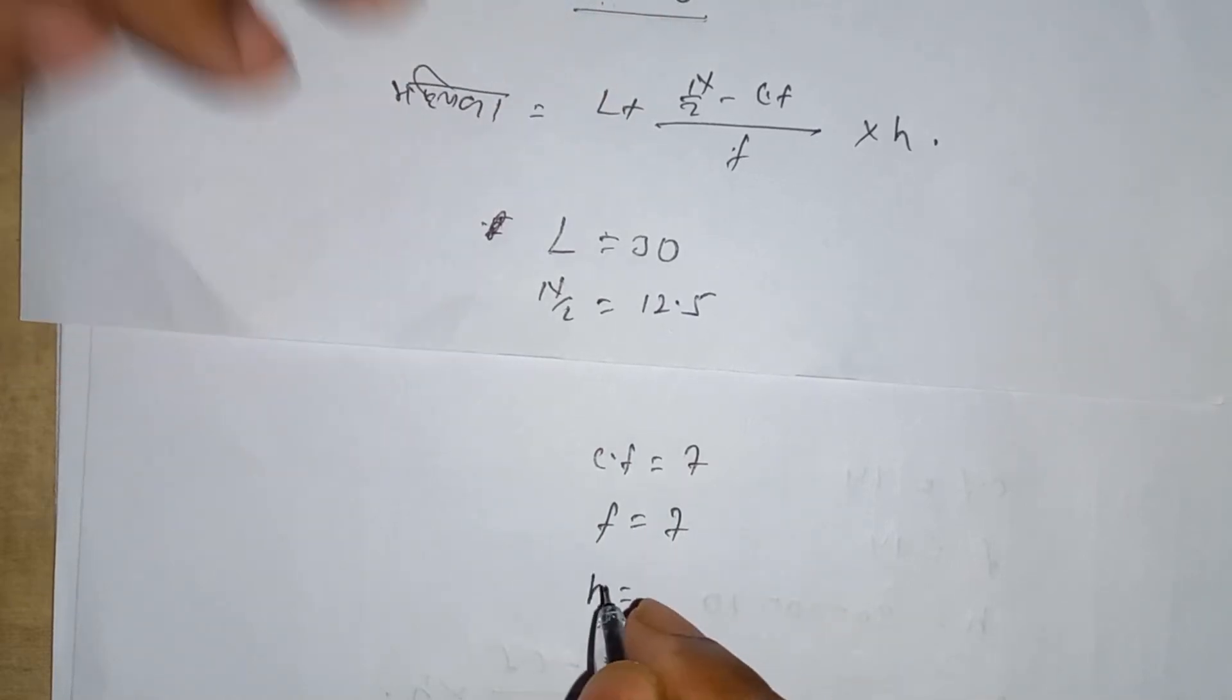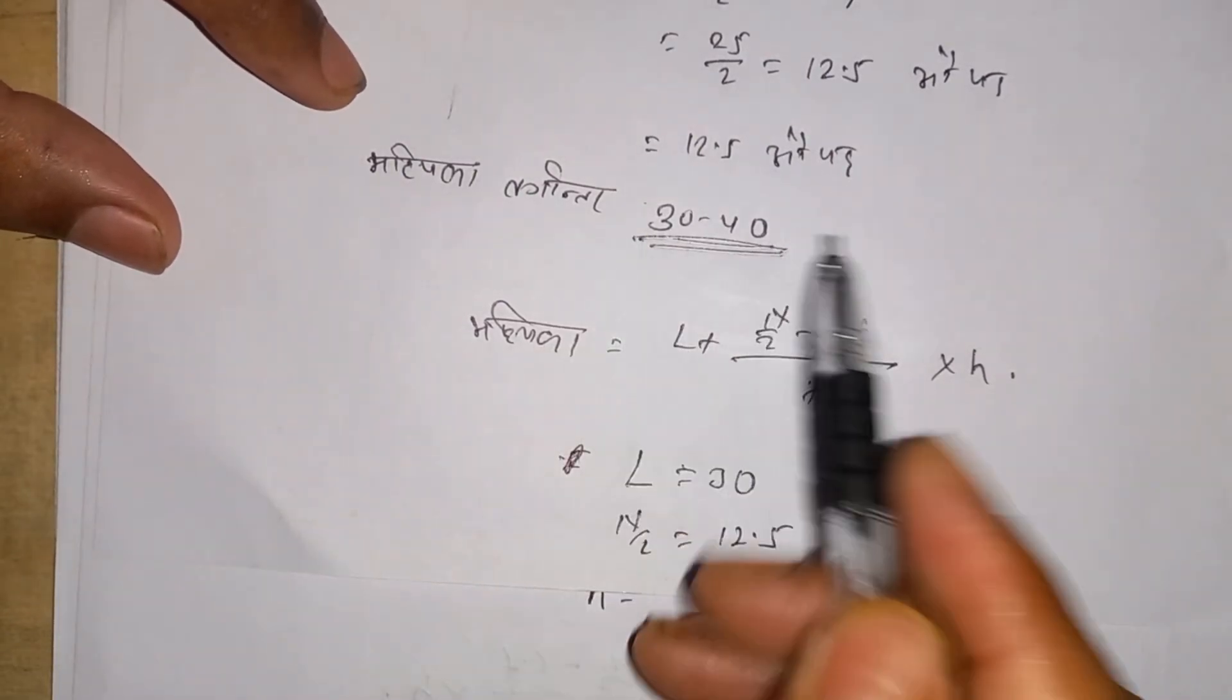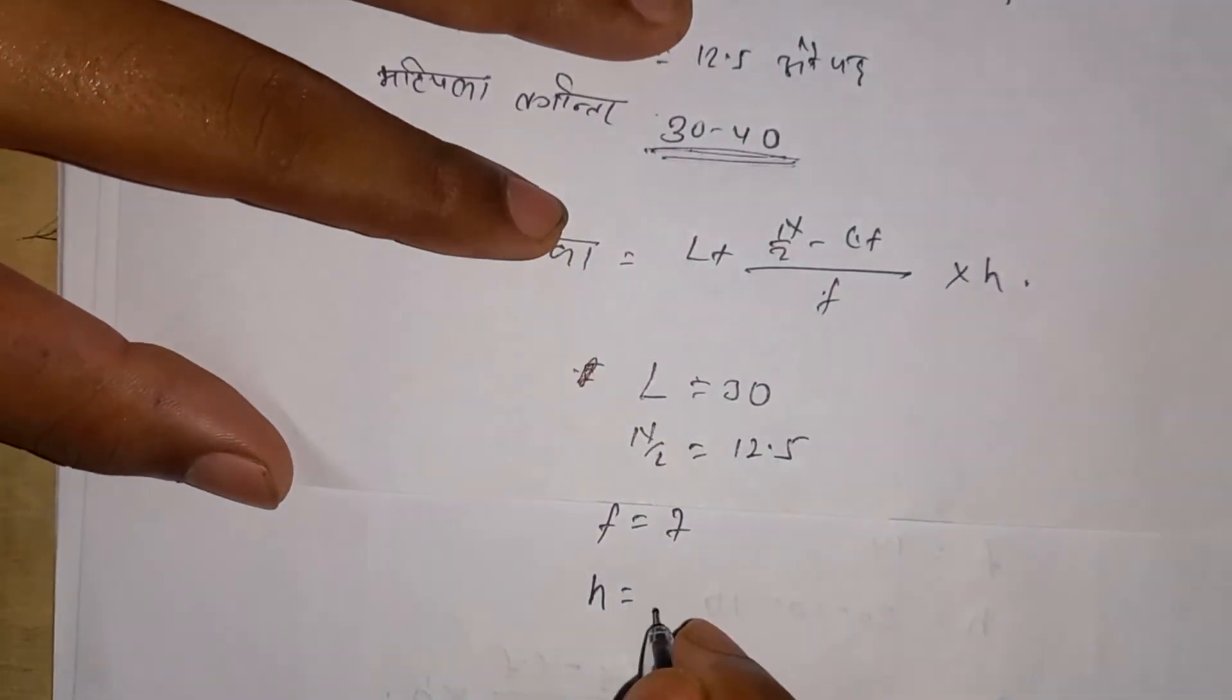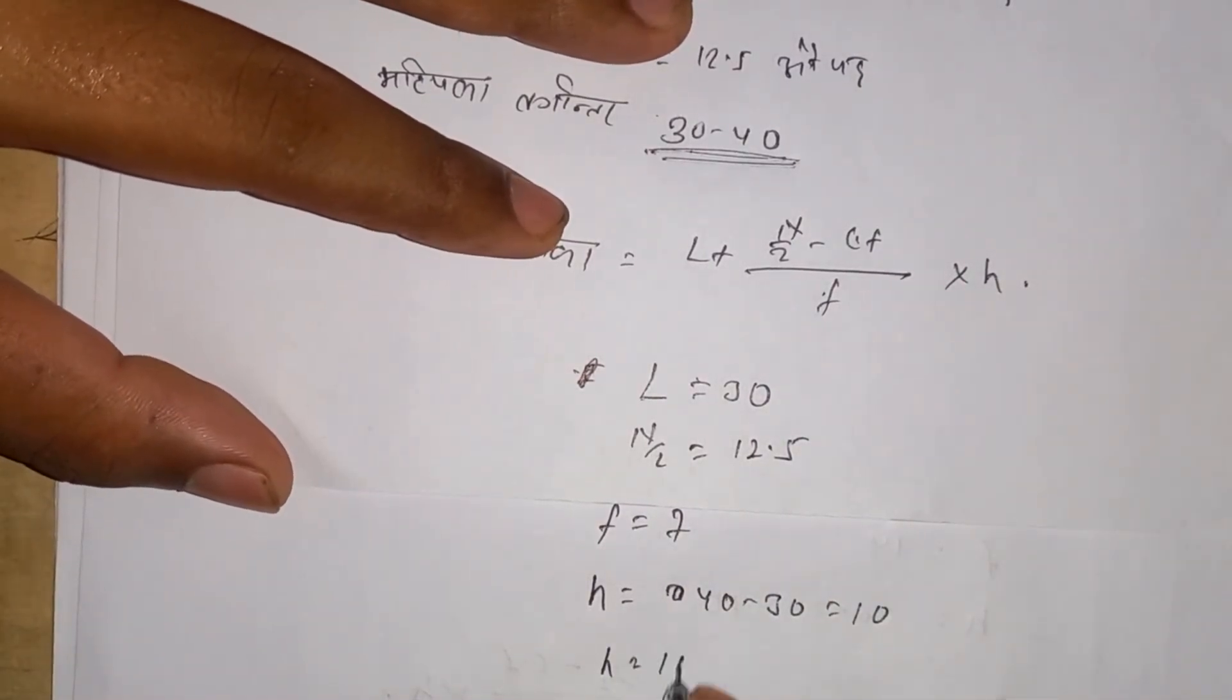Next we need h, which is the class interval width. The median class is 30-40, so the difference is 40 minus 30, which gives h equals 10.